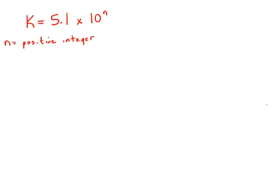If n is a positive integer and k equals 5.1 times 10 to the n, what is the value of k? So we know a fair bit about k already. What we don't know is the size of n, which is to say how many zeros it will have after it.